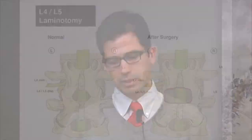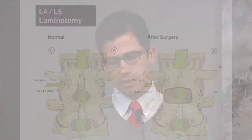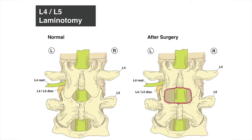Open discectomy is usually performed under general anesthesia, where the patient is unconscious, and typically requires one day of hospital stay. It is performed with the patient lying face down. During the procedure, we make approximately a one-inch incision over the low back, the muscle tissue is moved from the bone above and below the affected disc, allowing for a clear view of the herniated disc. In some cases, bone and ligaments may have to be removed.